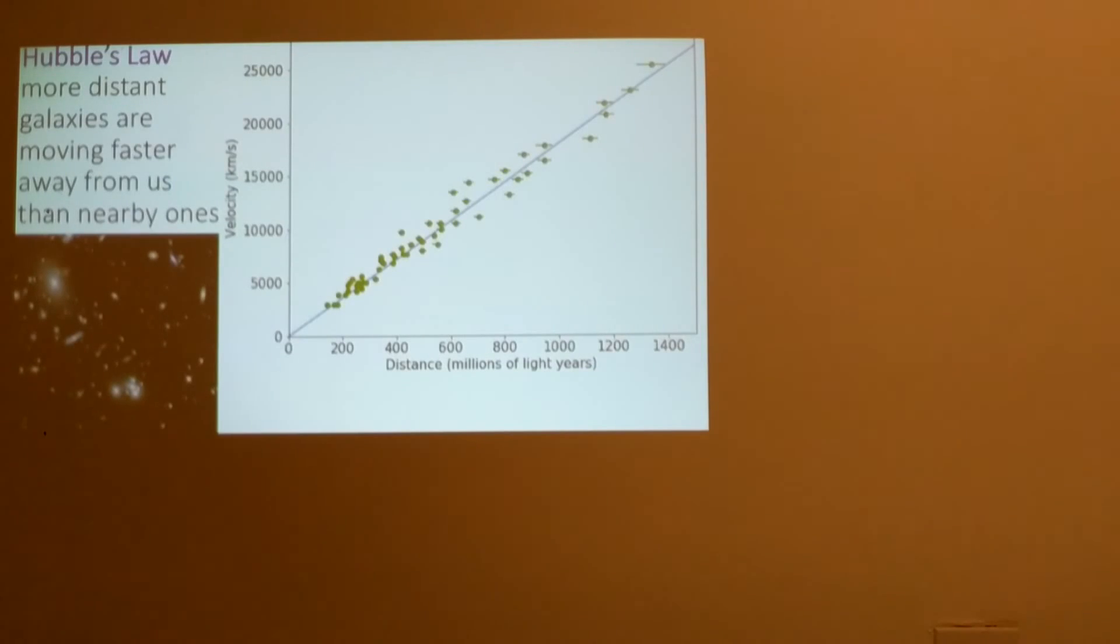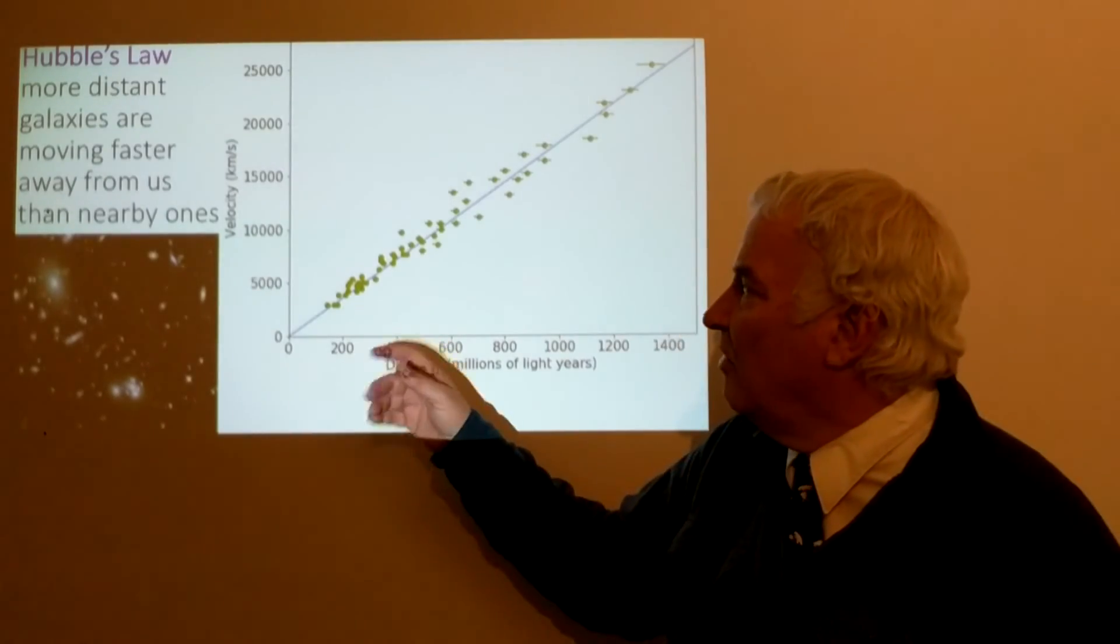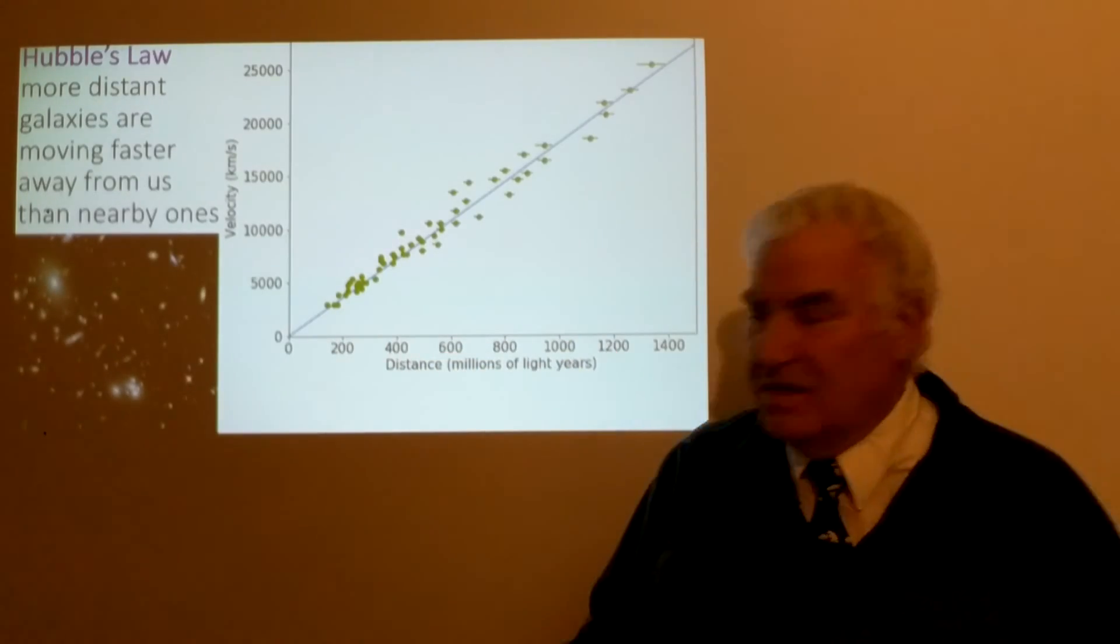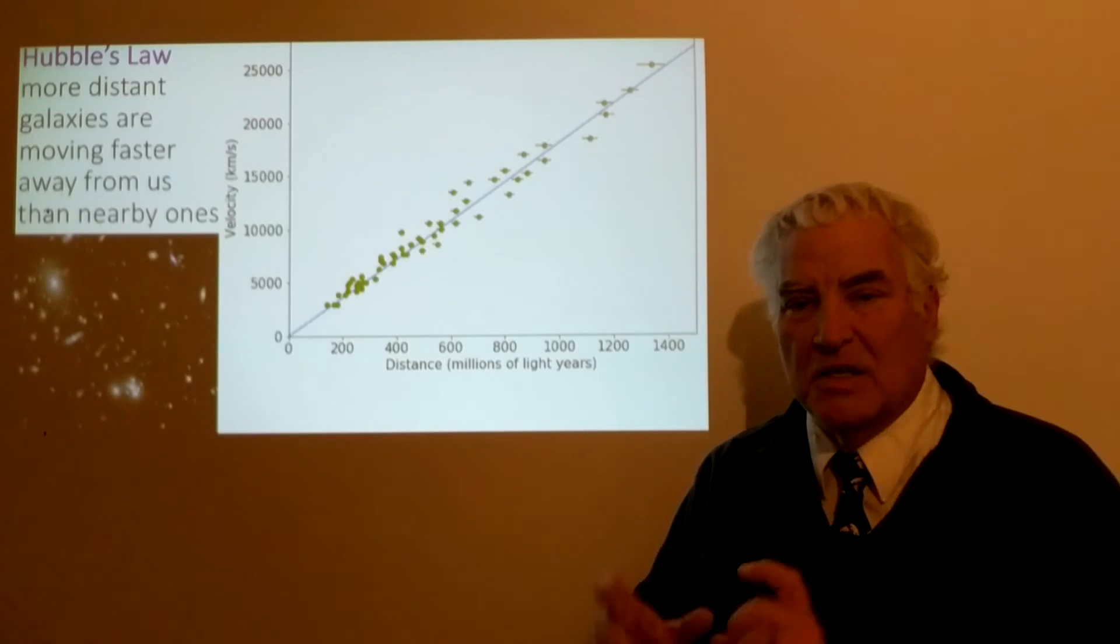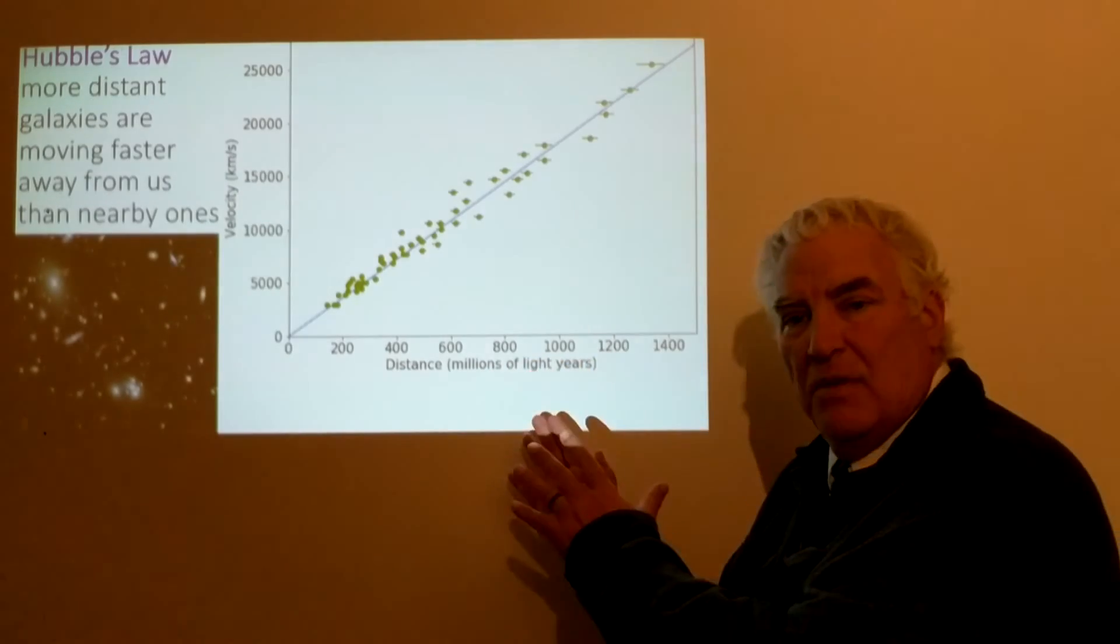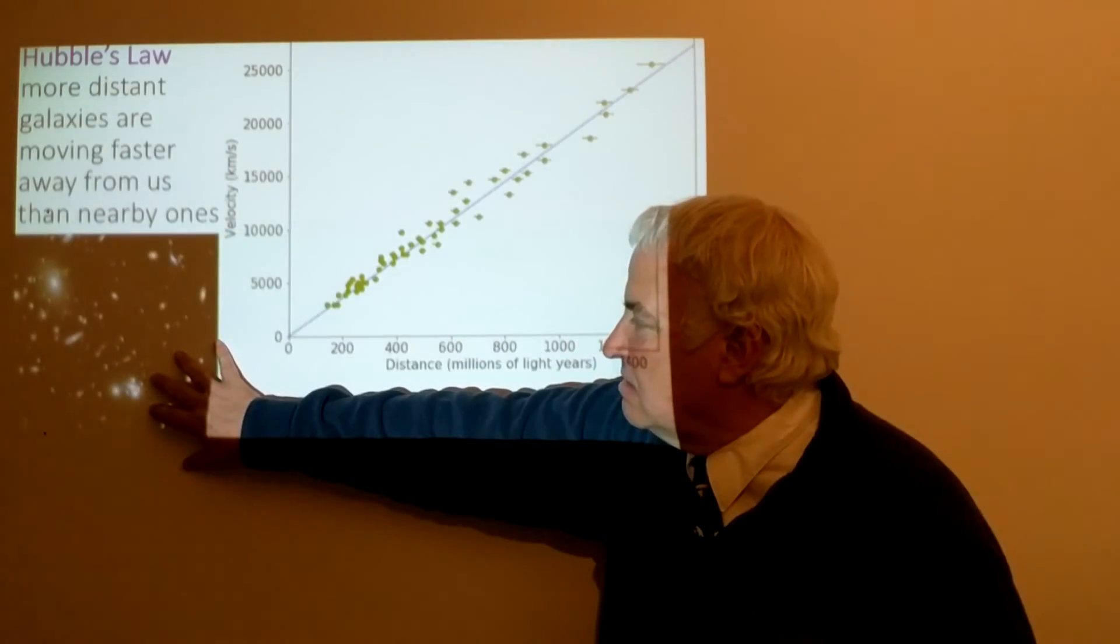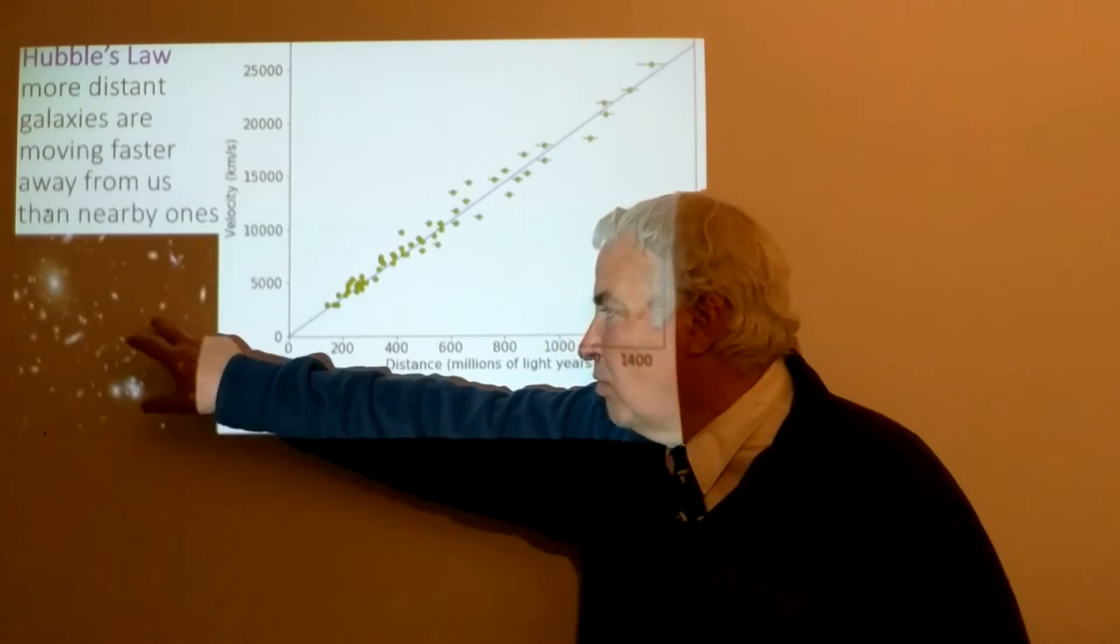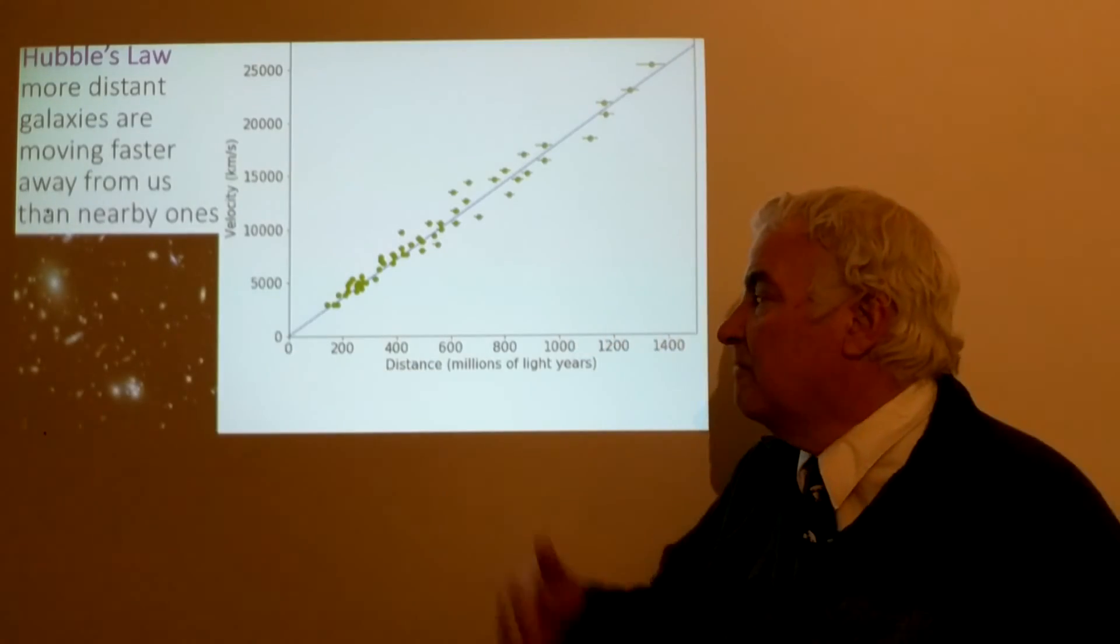So Hubble's law is that the more distant galaxies are, the faster they're moving away from us. When we look at galaxies we can take the spectrum and see the Doppler shift, that the spectral lines show that they've been red shifted or blue shifted. And it turns out that as we looked at many many galaxies, the nearby ones were red shifted but the far ones which you could sort of tell because they looked like they were further away and they were fainter, they were moving faster away.